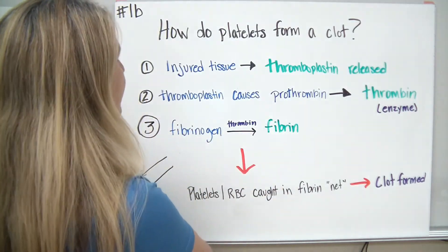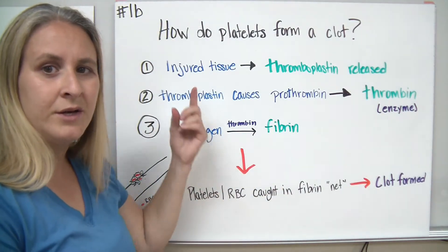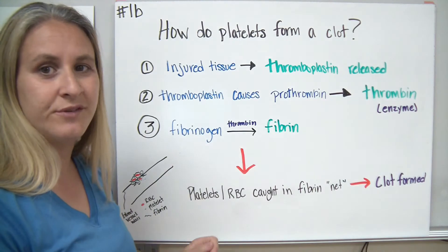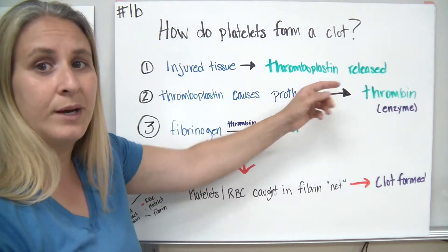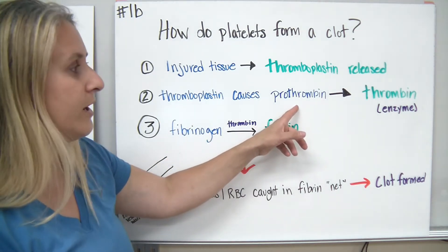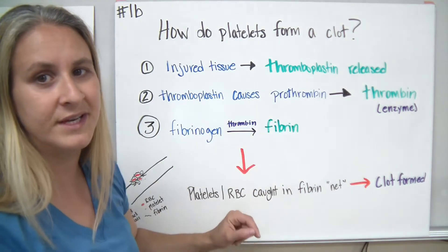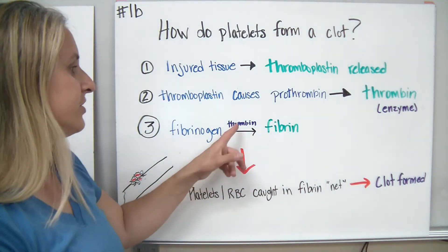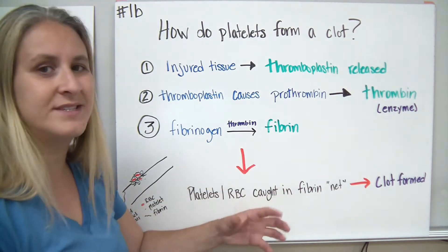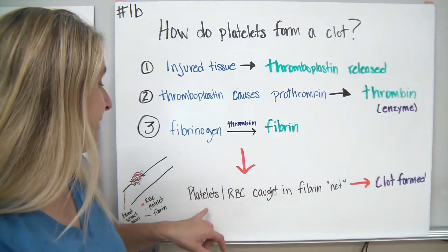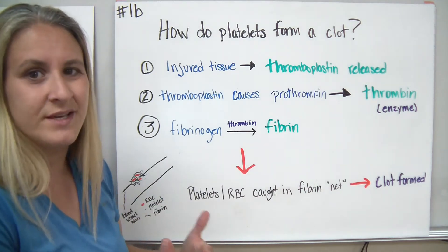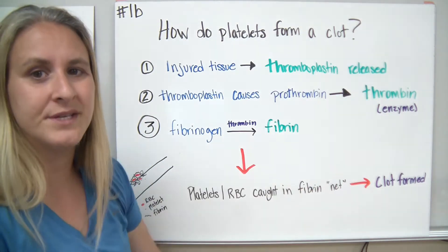Let's move on to the clotting process. How do platelets actually form a clot? It's a three-step process controlled by enzymes. First, you have some sort of an injury, which causes something called thromboplastin to get released. Once that's released, it causes prothrombin to turn into thrombin, which is an enzyme. In the third stage, that enzyme thrombin is used to convert fibrinogen into fibrin, which is a mesh or net layer that helps the platelets and red blood cells stop from getting released any further.